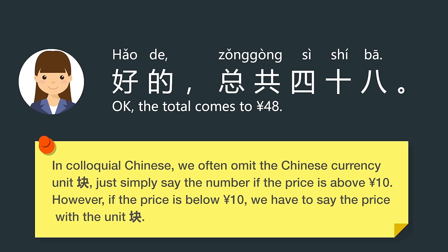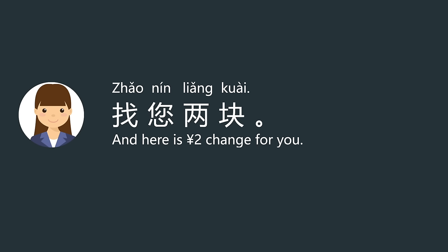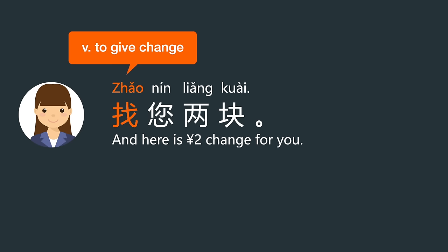However, if the price is below 10, we have to say the price with the unit. 带走. 给你五十. 找您两块 — 找 means to give change. When you have paid for something with more money than it costs, the cashier will give you the change.